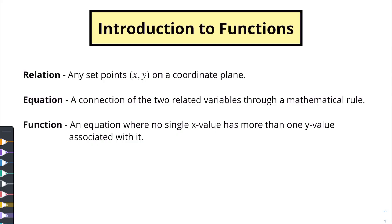A mathematical rule is just another way to say an equation — things like 3x plus 2, x squared, or cosine of x when you get into trigonometry. All of those are mathematical rules. Finally, a function is simply an equation where no single x value has more than one y value associated with it.